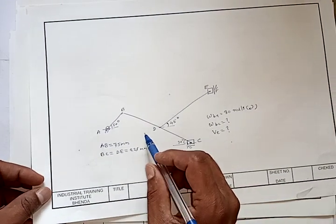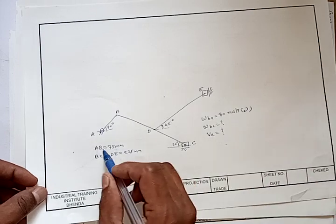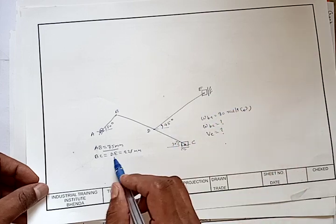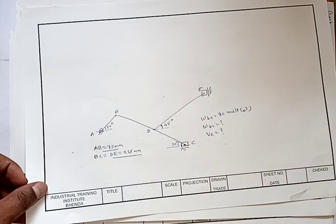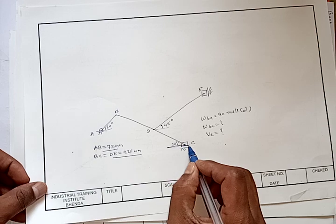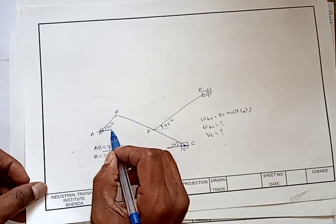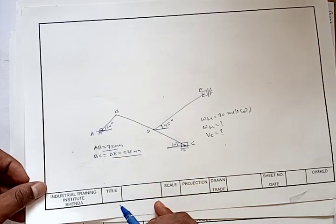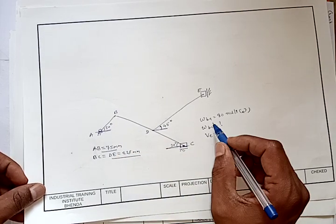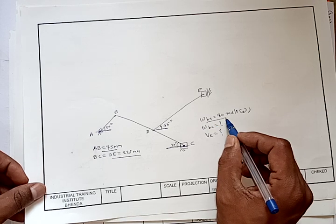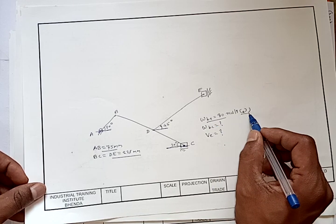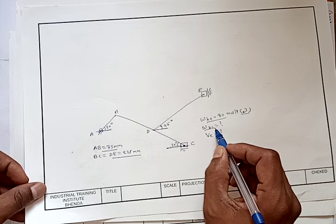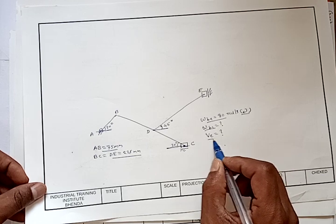This is my problem statement. In the given mechanism, AB is 75 mm, BC is equal to DE is equal to 225 mm. Angle at C is 30 degrees, angle at A is 30 degrees, angle at D is 45 degrees, and D is the midpoint of link BC. Angular velocity of link BA is given as 80 radian per second in the clockwise direction. We will determine angular velocity of link BC and velocity of slider E.